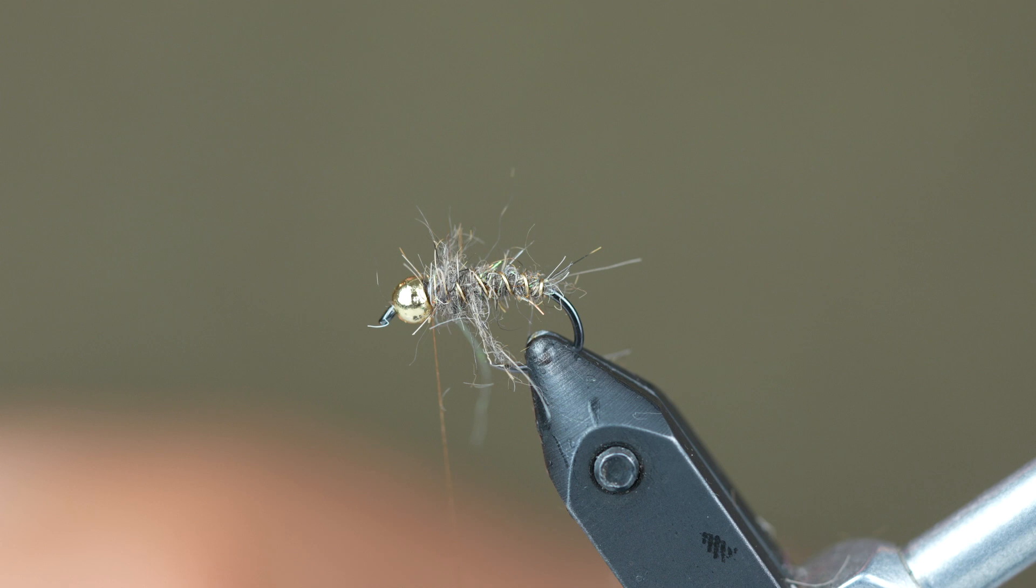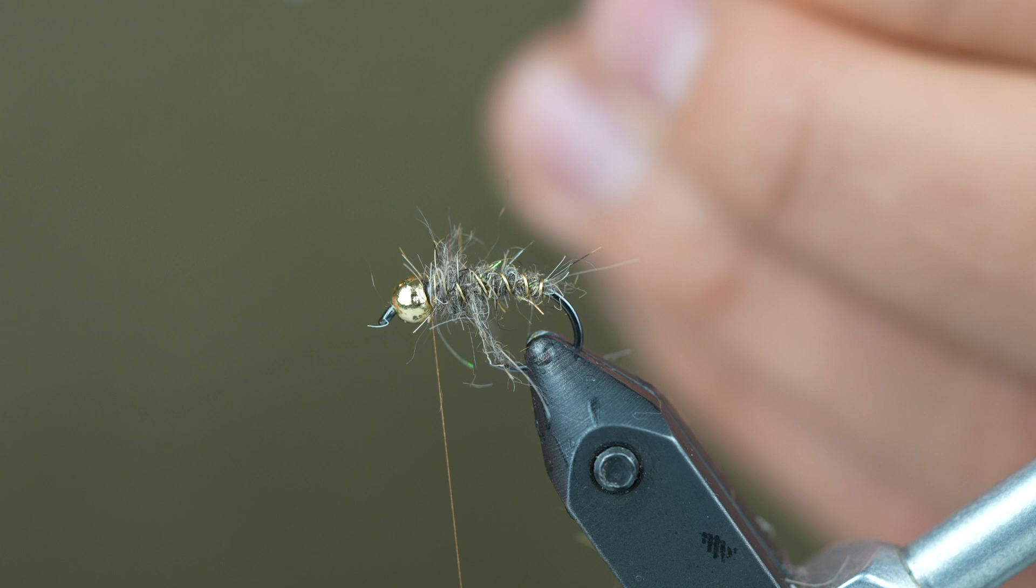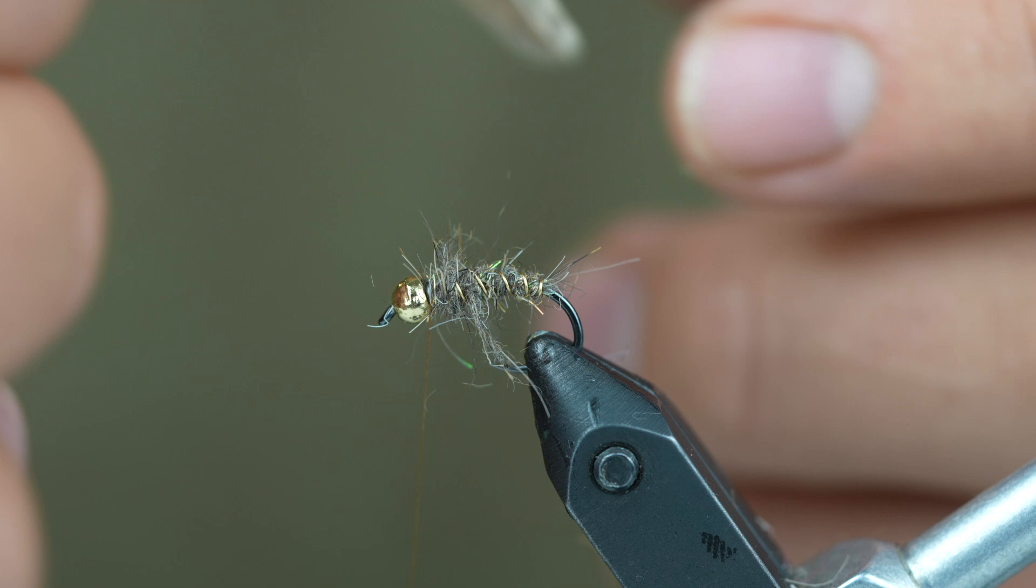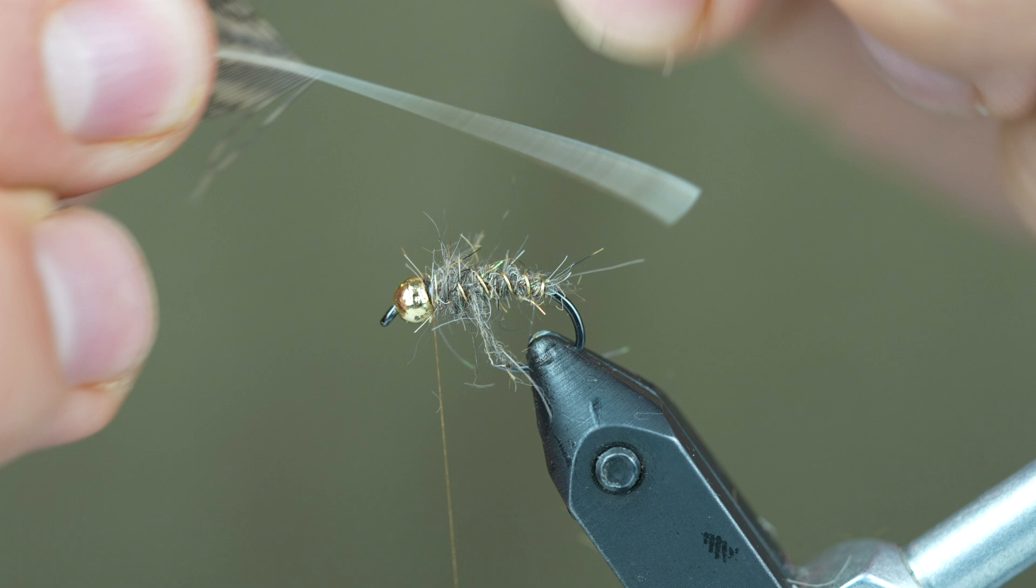Now the soft hackle that you use can pretty much be whatever your favorite soft hackle is. I'm using India Henback here, but you can also use partridge or grouse or whatever you happen to have and like for your particular area or how you like to tie. We're going to look for a feather that has fibers that are about the length of the hook. Those are a little bit long right there at the bottom, so we'll just take off a little more.